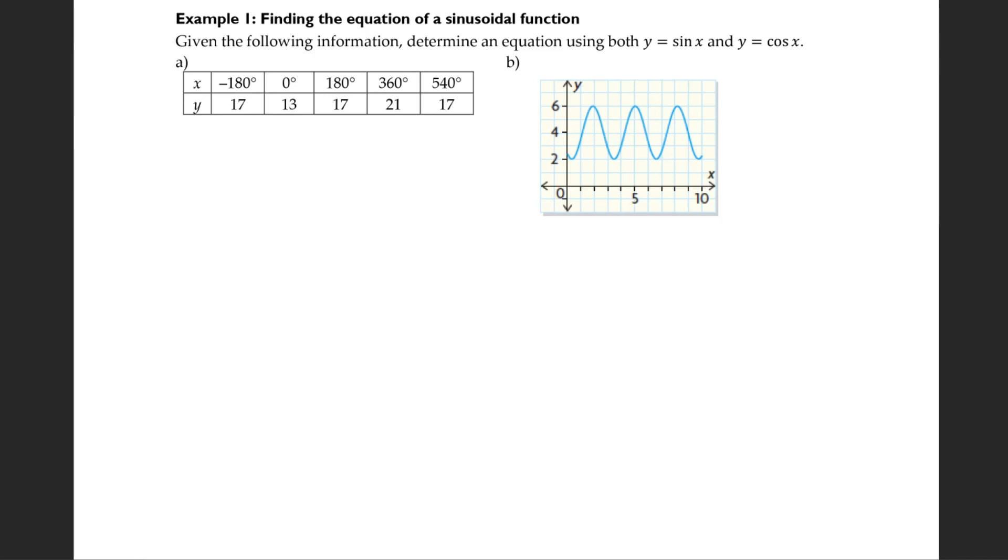Now we're going to start with some examples. Example 1, we have this table of values. So we can start by finding the amplitude. You can see we have 17, 13, and 21. Clearly 13s are minimum and 21s are maximum. A equals max minus min divided by 2, which is 21 minus 13 divided by 2. 21 minus 13 is 8 over 2, which is 4.